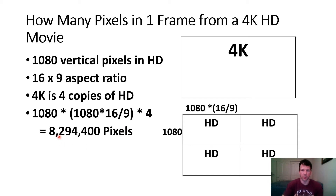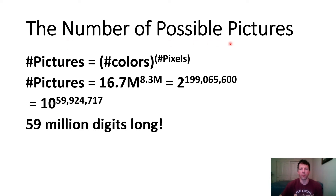The pixels are uncorrelated, so we multiply 16.7 million times itself 8 million times. The number of possible pictures is the number of colors to the power of the number of pixels, since each pixel is independent. This is exponentiation, not multiplication — you get 2 to the 199 million power, or in base 10, 10 to the 59 million power. That's a number 59 million digits long. You have no chance of seeing all the pictures that could ever possibly be.